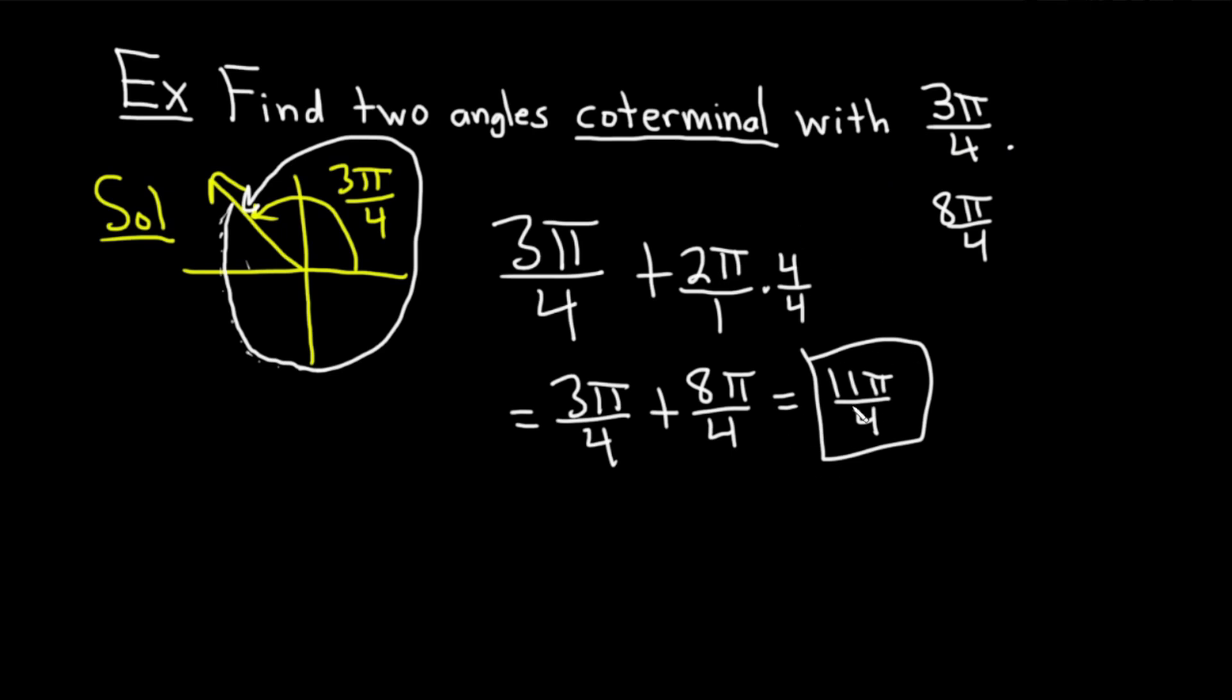To find another one, we can just take 3 pi over 4 and subtract 2 pi. Or we can just add 2 pi again to this one. Let's just add 2 pi again to this one. So, we have 11 pi over 4 plus 2 pi. And again, we can write 2 pi as 8 pi over 4. So, this is equal to 11 pi over 4 plus 8 pi over 4.